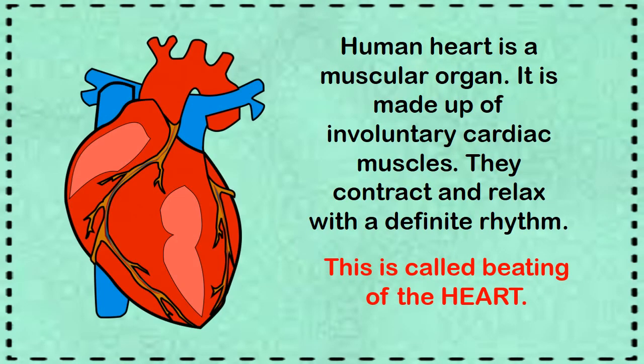The human heart is a muscular organ. It is made up of involuntary cardiac muscles. Involuntary cardiac muscles perform their function by themselves — not by our will. It continuously happens. They contract and relax with a definite rhythm, which is called the beating of the heart.